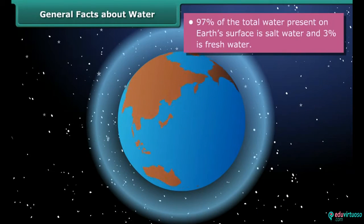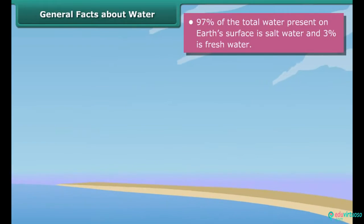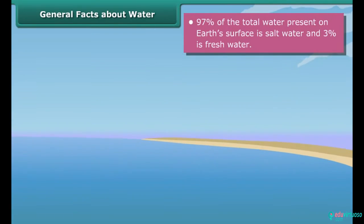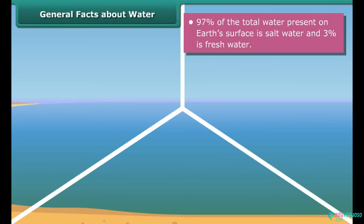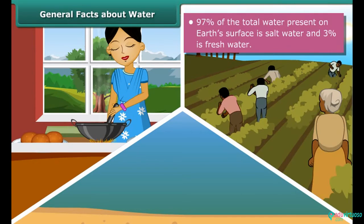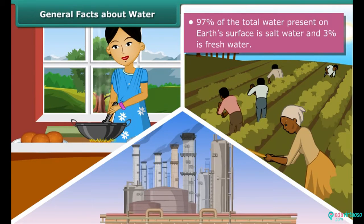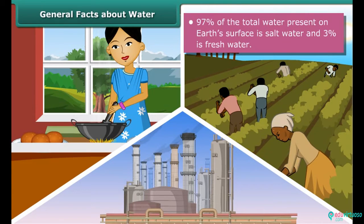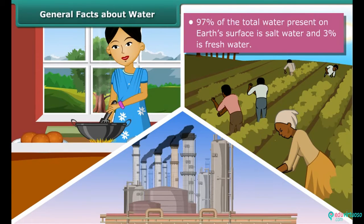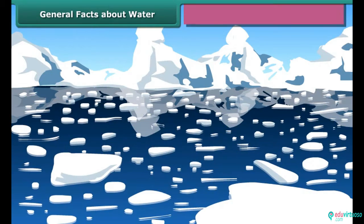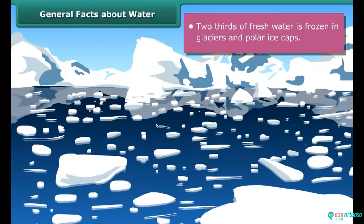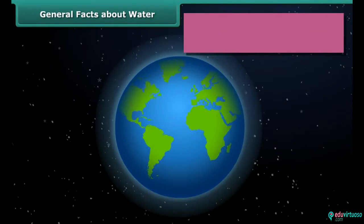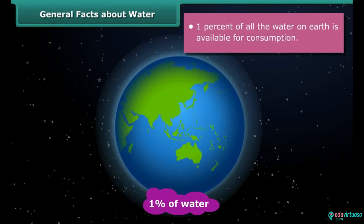Ninety-seven percent of the total water present on earth's surface is salt water, so it is not safe for household, agricultural and industrial consumption. The remaining three percent is fresh water, two-thirds of which is frozen in glaciers and polar ice caps. That means roughly one percent of all the water on earth is available for consumption.